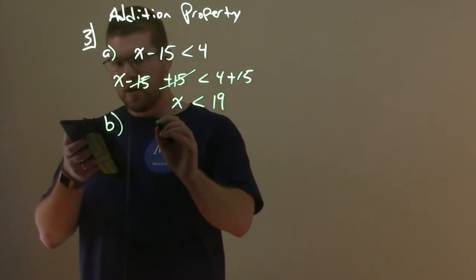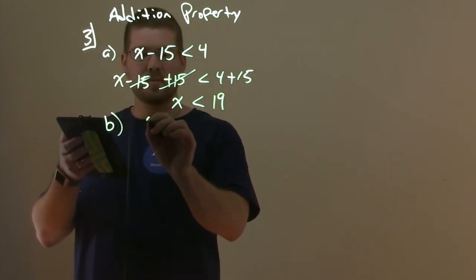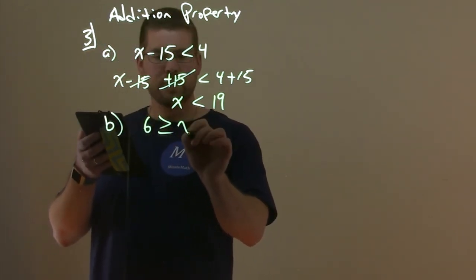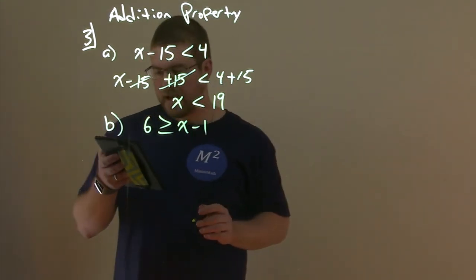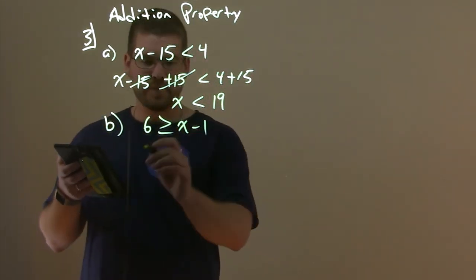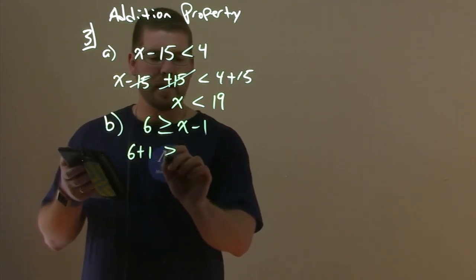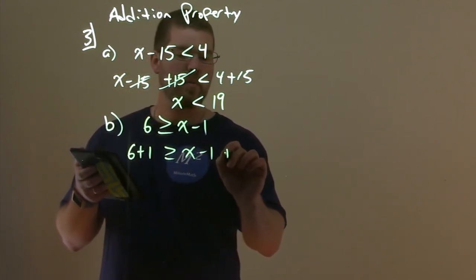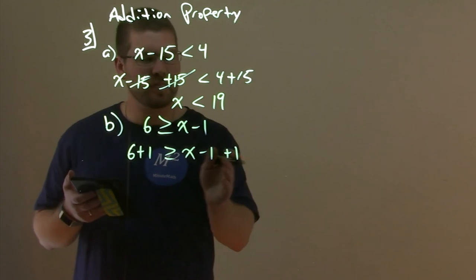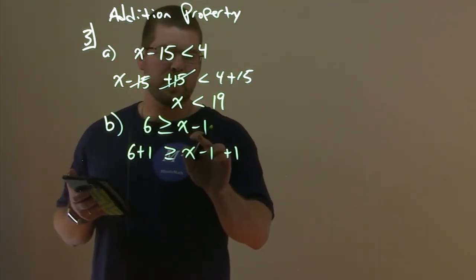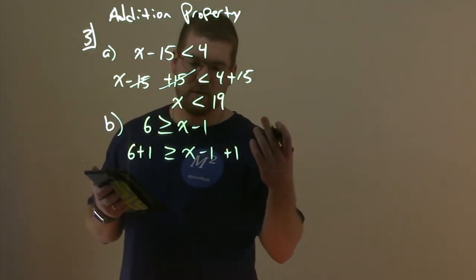Part B here. We're given this problem: 6 is greater than or equal to X minus 1. Again, same idea. We can add 1 to both sides. So let's do that. 6 plus 1 is less than or equal to X minus 1 plus 1. And again, I picked plus 1 because I wanted to get X by itself, and there's a minus 1 here. So I just did the opposite, added a 1.